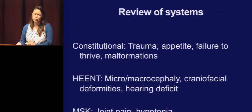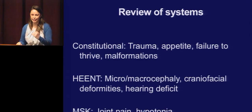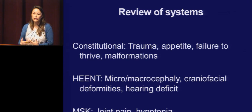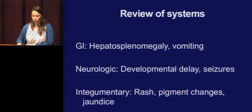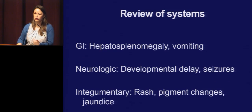Review of systems is obviously important. It may determine whether or not you're going to do a workup for these patients in terms of cataract etiology. Any time there's anything in the review of systems that's off, we'll usually have them see ocular genetics, pediatric genetics, or their pediatrician.